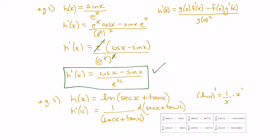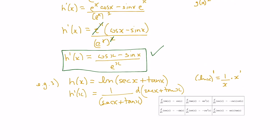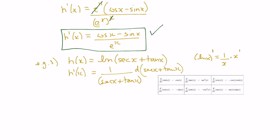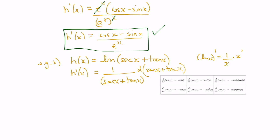We're using the sum rule here. So the derivative becomes secant x tan x plus secant squared x, all over secant x plus tan x. This is the answer — the calculus is done.